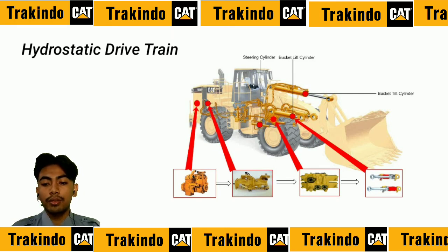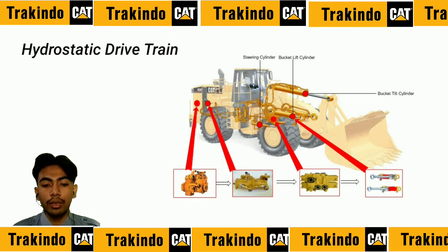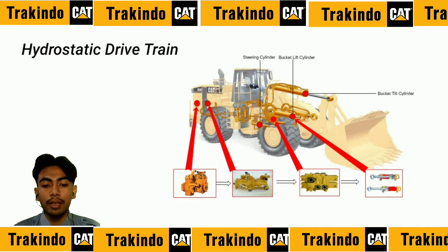Second, the hydrostatic drivetrain. In the hydrostatic system, the mechanical energy from the engine is converted into fluid energy, powered by a hydraulic pump, and forwarded to the control valve. The control valve functions to regulate the direction and speed of the machine. Then the hydraulic flow is forwarded to the hydraulic motor to change the fluid energy back into mechanical energy and forwarded to the axle and wheels. The advantage of the hydrostatic system is that it can produce a smoother and more precise level of control.